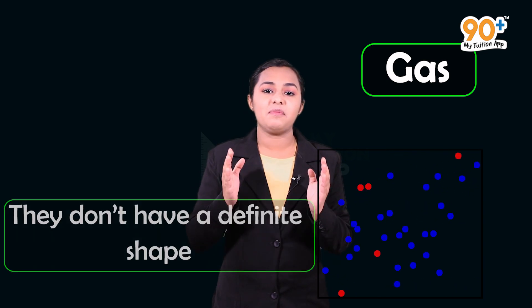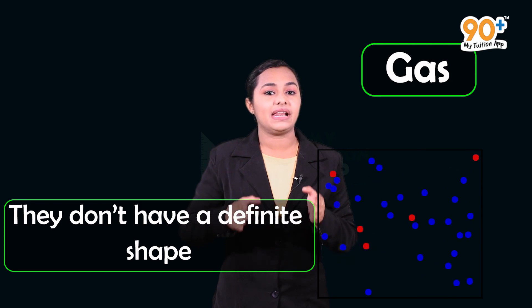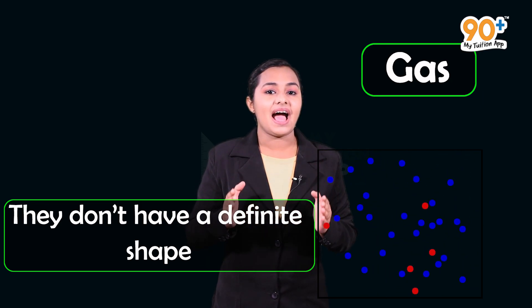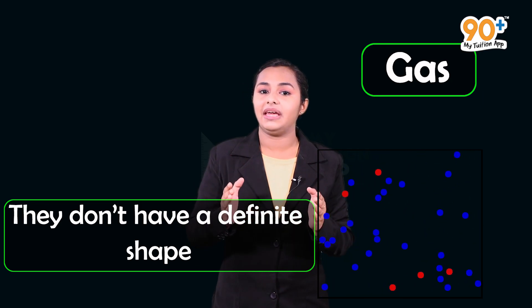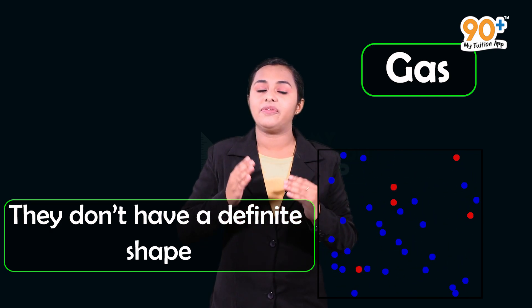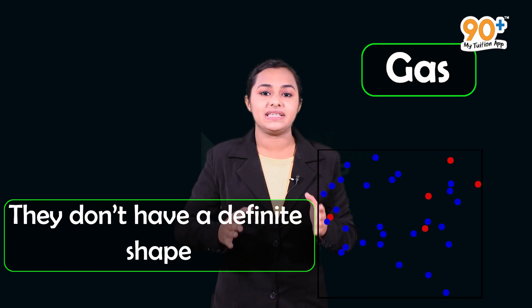Liquids take the shape of whichever container they are placed in. A gas spreads to fill the full area of its container, taking both the shape and the volume of that container.